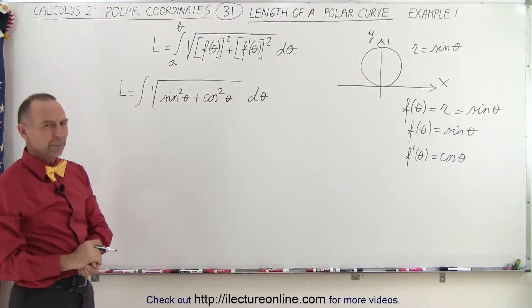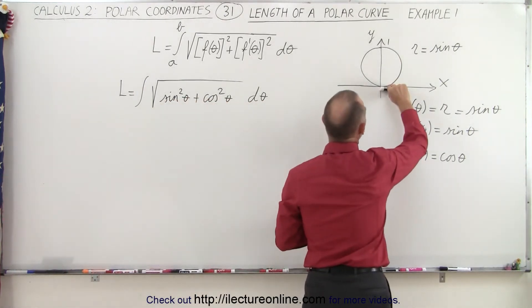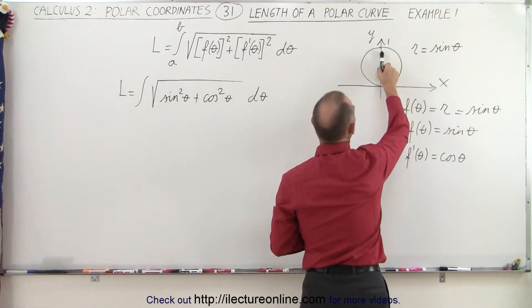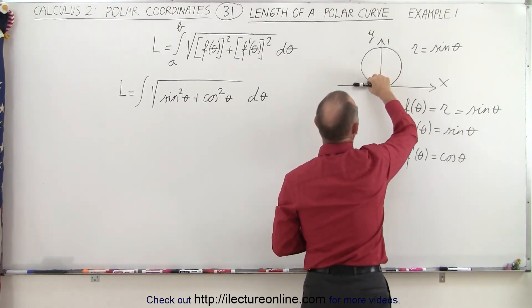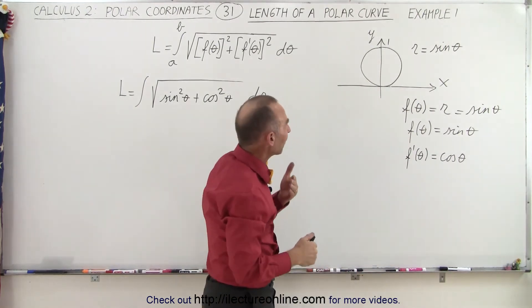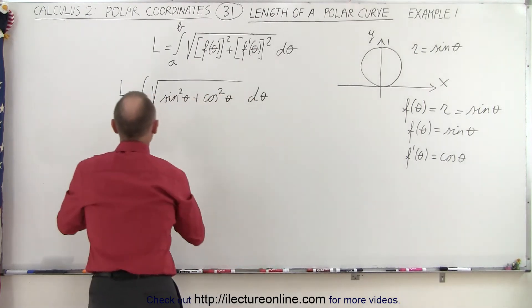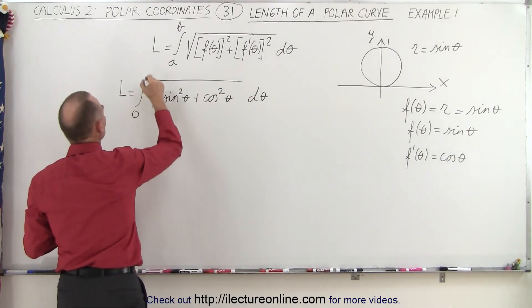What about the limits? Well, we want to go all the way around the circle, and notice we start at zero degrees. By the time we get to 90 degrees, we have a half a circle, and by the time we get to 180 degrees, we have a full circle. So we only have to integrate from zero to pi instead of from zero to two pi. So the limits of integration is going to go from zero to pi.